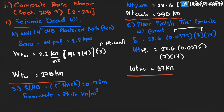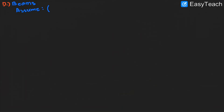Next, the weight of the beams. Based on initial design analysis, the maximum beam dimension was identified as 0.4 by 0.5 meters. The total length of the beams for dead load computation is 14 meters plus 7 times 4, giving a total beam length of 42 meters.